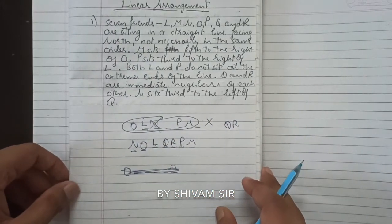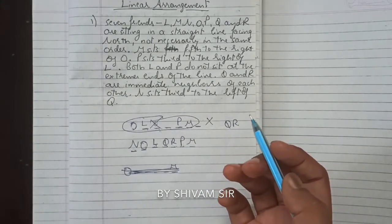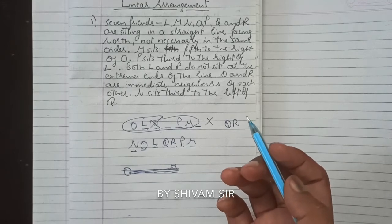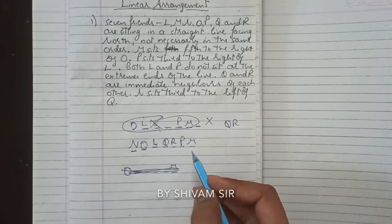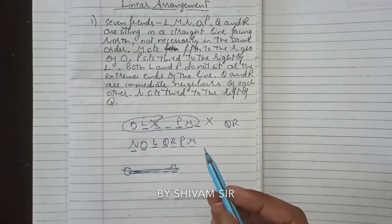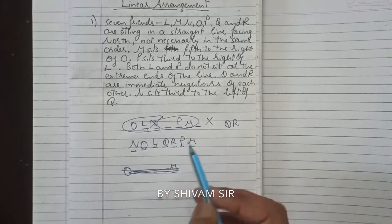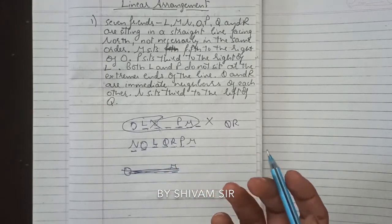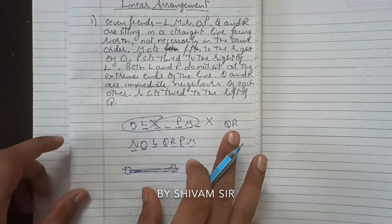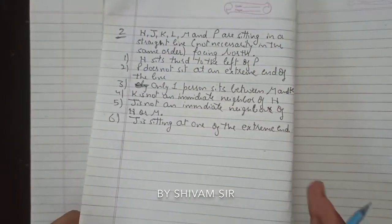Now questions may be asked based on this arrangement. Who sits second to the left of Q? — Answer: O. Who is at the immediate right of P? — Answer: M. Which pair is at extreme corners? — N and M. Who is sitting between L and R? — Answer: Q. Questions will be formed this way.